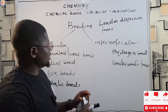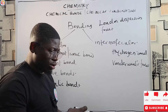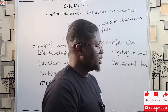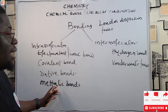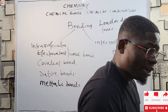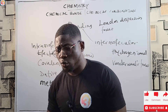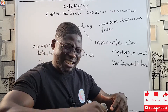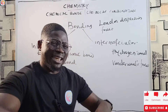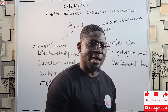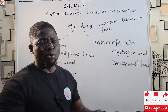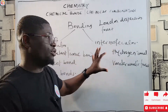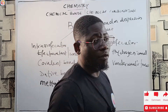Bonding is the coming together of two or more atoms to form a molecule or a compound. The reason bonding exists is so that atoms can attain their stable nature. Most atoms find a way to attain that stable structure by bonding with other atoms. Bonds may be intramolecular or intermolecular, as we have seen.